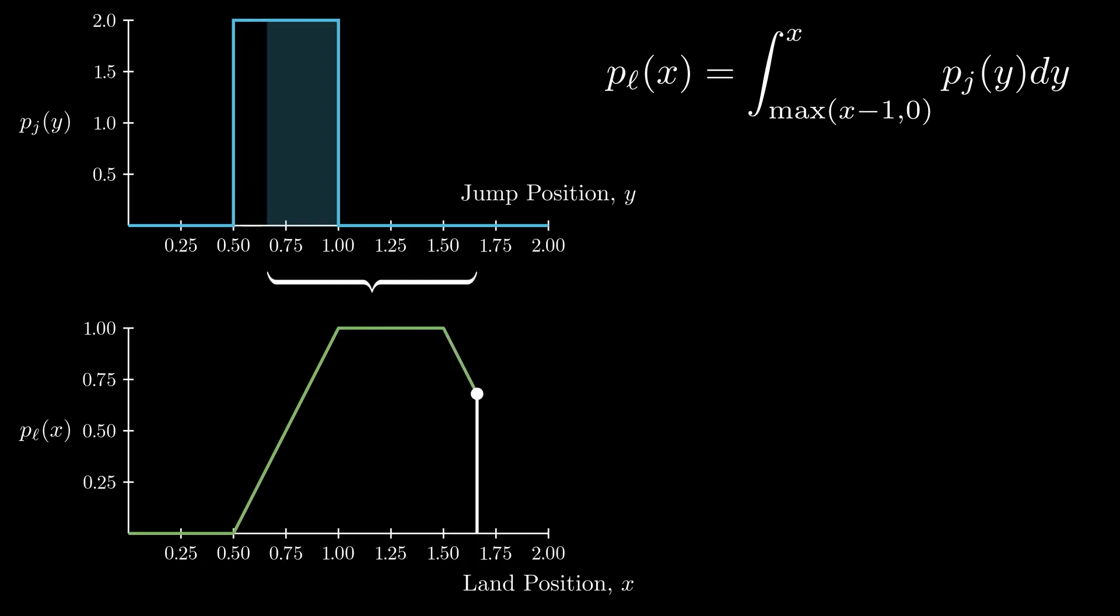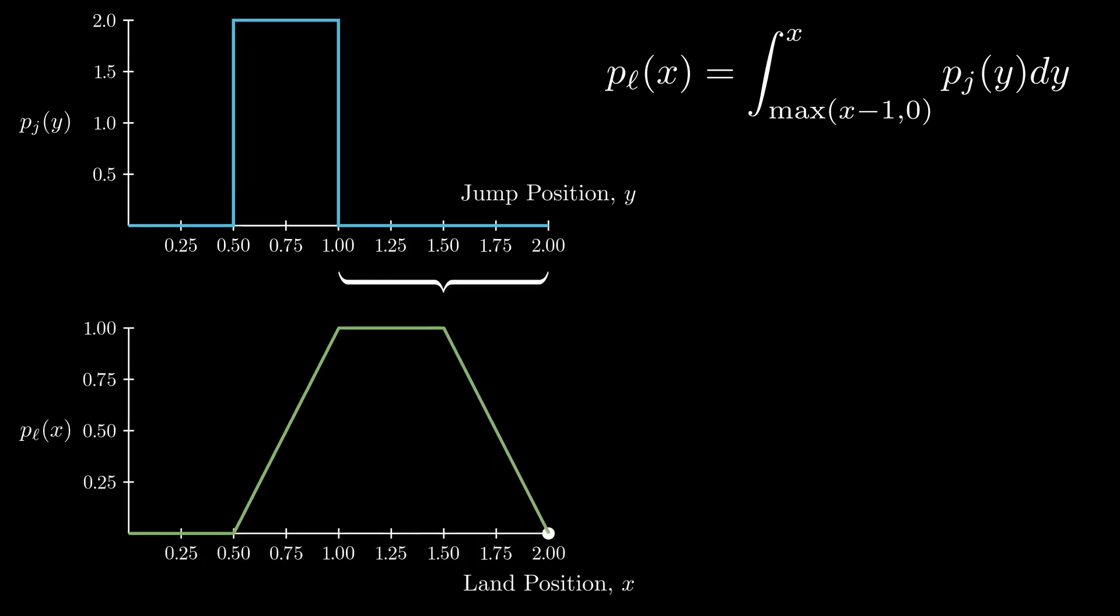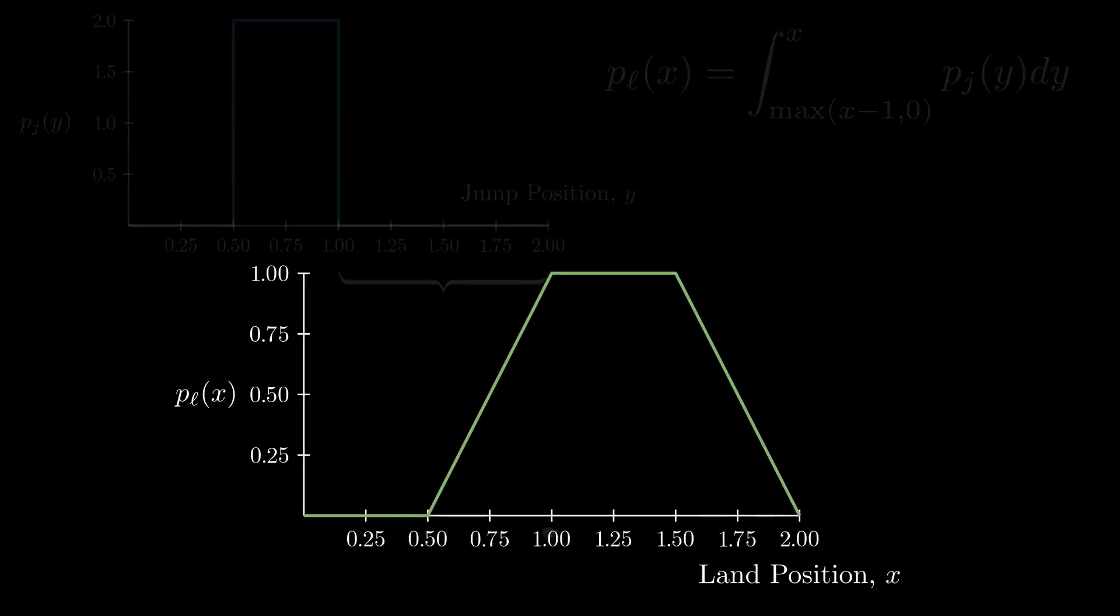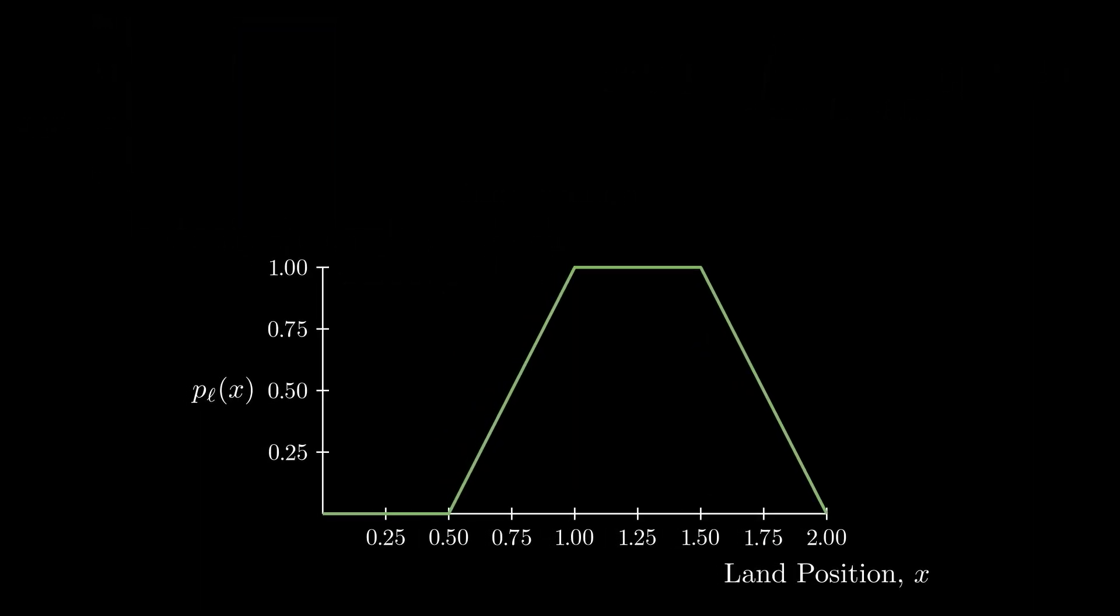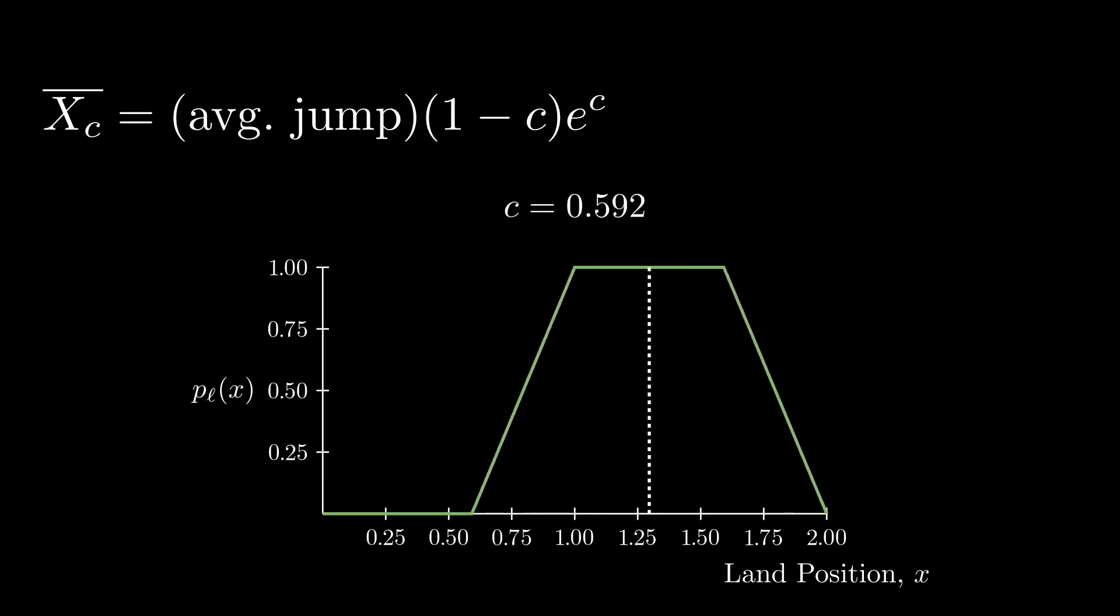We see that we get back the exact trapezoid distribution that we found through our simulations. We now have all that we need to calculate the average score given a cutoff. The average value is just the average jump times the probability that we actually jump. As we look at how the landing distribution varies with c, it becomes clear that if we jump, the average jump is given by the center of the plateau, (1 + c)/2.